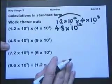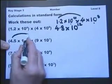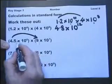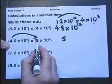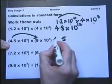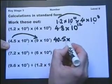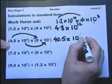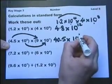Let's look at this one. First multiply these two parts: 9 times 4.5. So 9 times 5 is 45, carry the 4. 9 times 4 is 36 and 4 makes 40. Now let's multiply these two together by adding their indices. 6 and 7 adds up to 13.